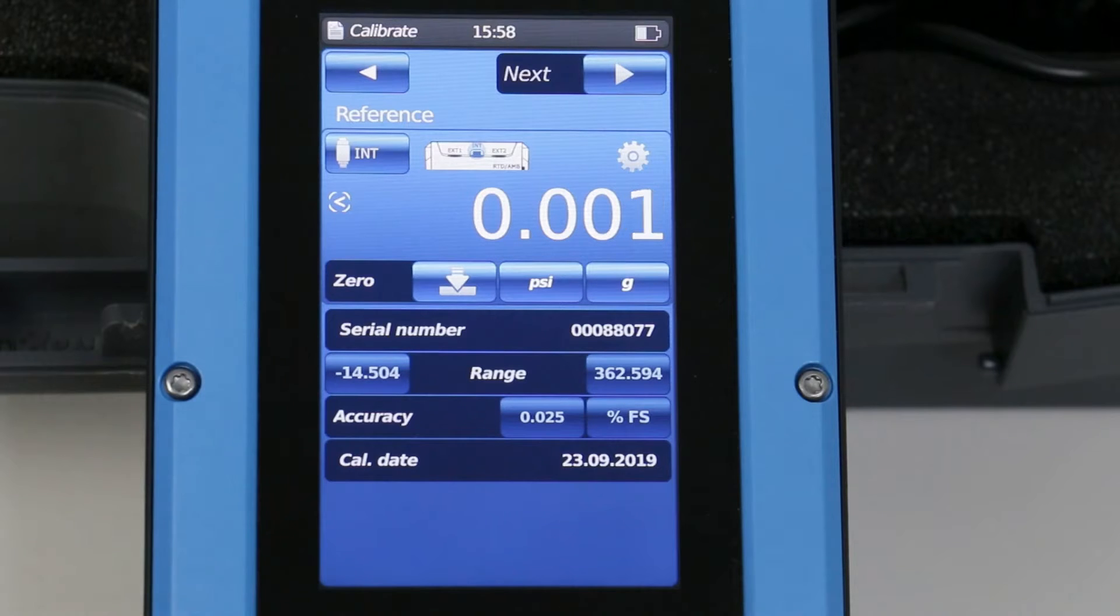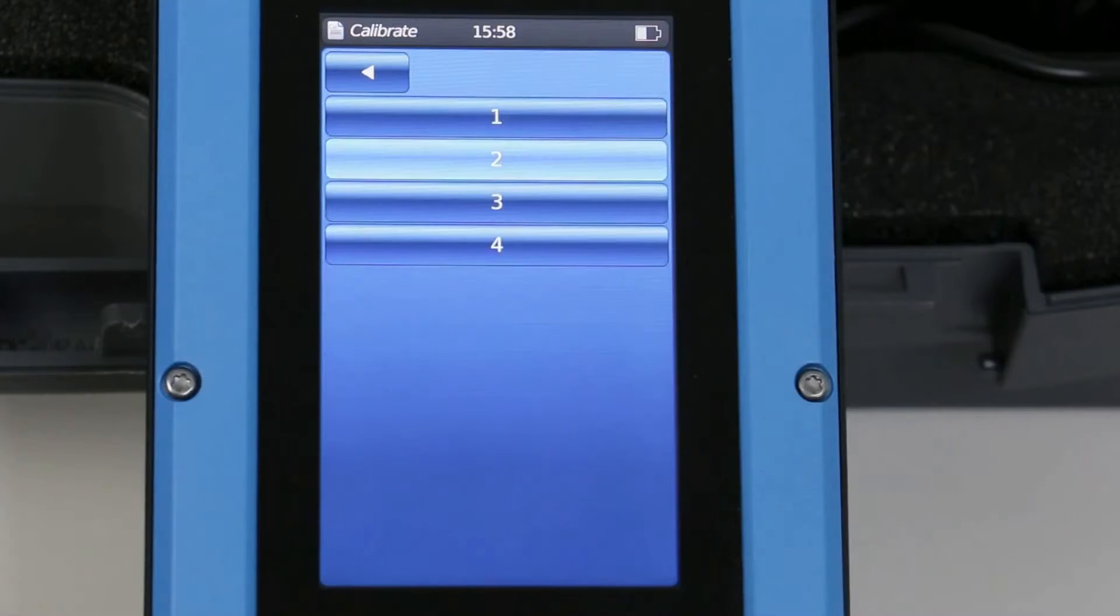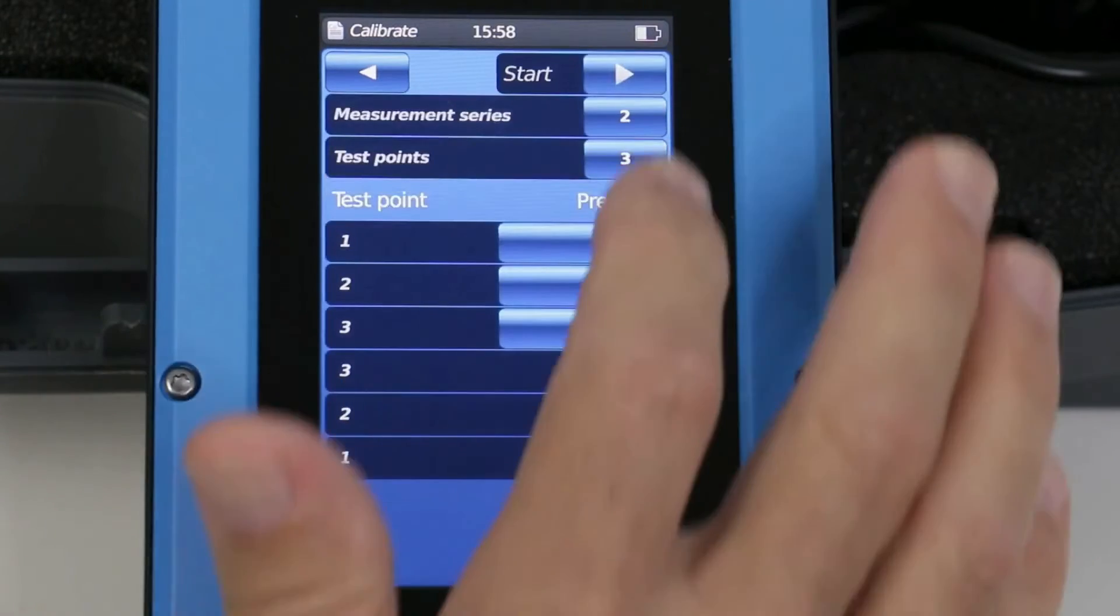Select the number of test series and number of calibration points. The CPH7000 automatically calculates test points based on these choices.